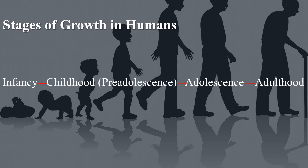Childhood or preadolescence is the stage of growth from about 2 years to 11 or 12 years of age. During childhood, children grow in size and weight at a steady rate. They grow intellectually, emotionally, and socially. They go to school and learn many things, and they also start to do their routine activities themselves. The stage between childhood and adulthood is called Adolescence.